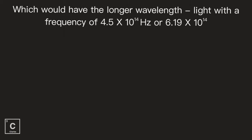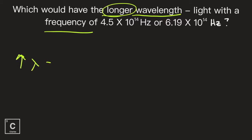Which would have the longer wavelength? Light with the frequency of 4.5 times 10 to the 14 Hertz, or 6.19 times 10 to the 14 Hertz? This does not need math — this just needs the relationships. We're relating wavelength with frequency. Remember, they have an inverse relationship. So it's asking what's going to have the longer wavelength. If we want a big wavelength, we would need the smallest frequency.